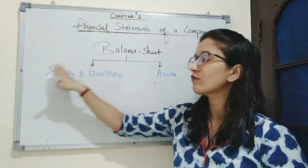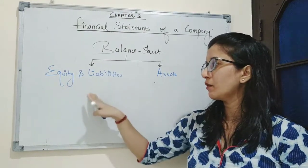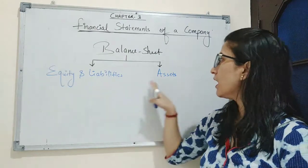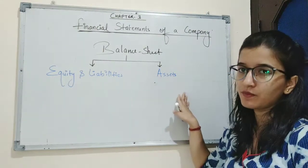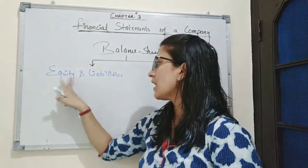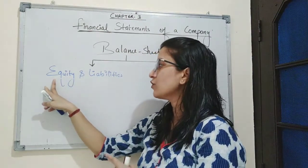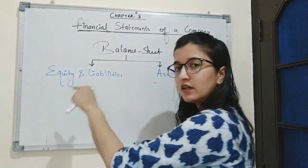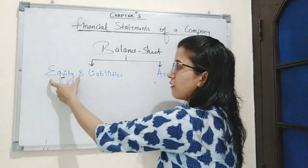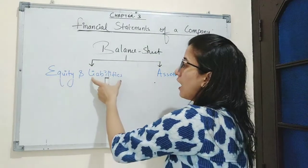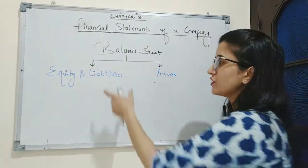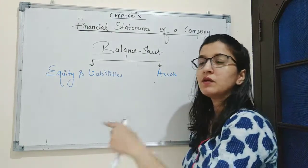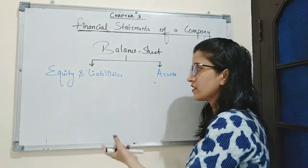Equity and liabilities consist of all the amounts which have been borrowed or which are due to other parties for the company. Assets are the properties of the business. Equity is the amount the business takes from the owner — that means the owner is investing in the business, and that amount is a liability for the business. Liability is the amount which the business borrows from a third party such as a bank, investors, or shareholders.